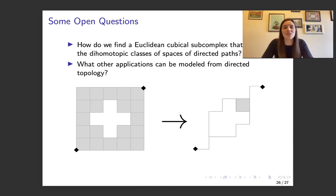And then the other question is, what other applications can be modeled from directed topology? So we've seen concurrent computing, some motion planning, some hybrid dynamical systems. What else? What else could there be? And so those are some fun things that can be explored.